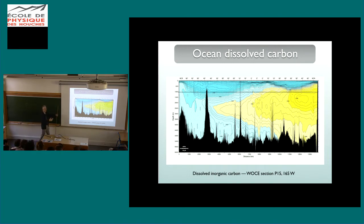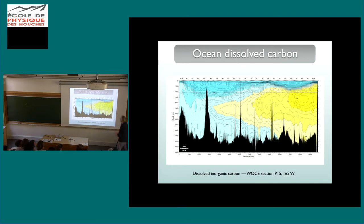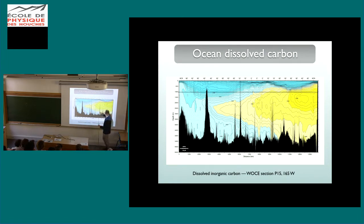There is a question about why there seems to be high carbon concentration in the north. These signals are background signals; anthropogenic carbon dioxide signals are very small compared to anything you're seeing here. This section is in the Pacific — it's the oldest water. Water sinks around Antarctica, comes down there, then turns around and comes back, so this is the oldest water most replenished with organic carbon. If I showed the Atlantic, it wouldn't be as dramatic.